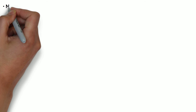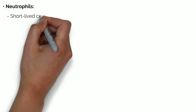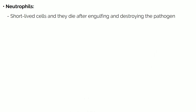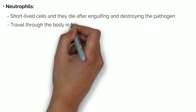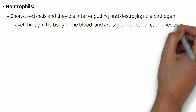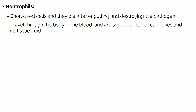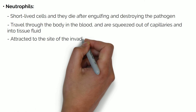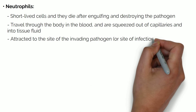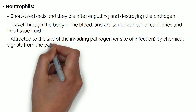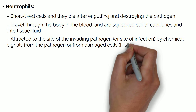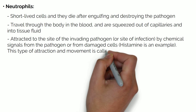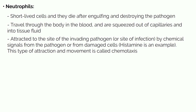Neutrophils are short-lived cells and they die after engulfing and destroying the pathogen. They travel through the body in the blood and are squeezed out of capillaries and into tissue fluid. Neutrophils are attracted to the site of invading pathogen or the site of infection by chemical signals from the pathogen or from damaged cells. Histamine is an example. This type of attraction and movement is called chemotaxis.